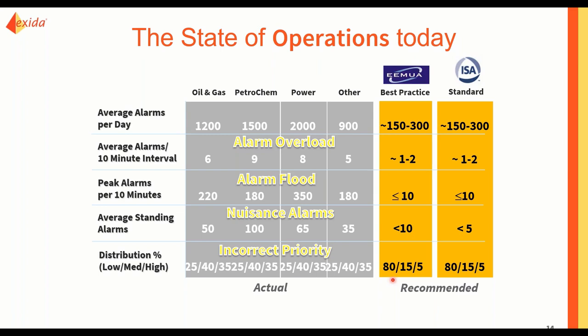There's another problem which can be dangerous and shows poor alarm system management: incorrect priority. This refers to having a large portion of alarms at high priority rather than low and mid priority. The ideal priority distribution, according to the European and ISA standards, should form a pyramid — the highest priority taking the least portion at the top, and the lowest priority taking the most at the base.